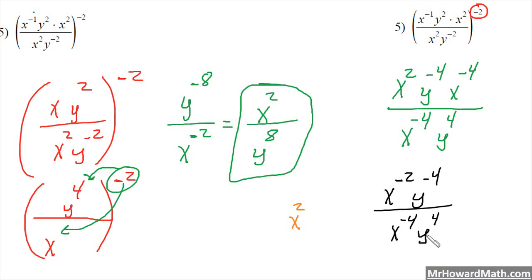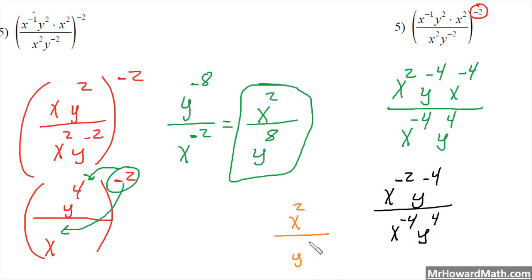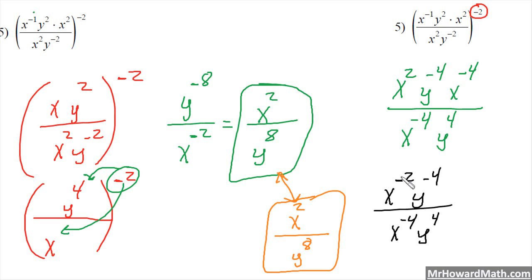For the y's: y to the negative 4 on top and y to the positive 4 in the denominator. The denominator's exponent is bigger by 8 — negative 4 to 4, they're 8 apart — so I have y to the 8th in the denominator. We get the same answer either way, so the path you take doesn't matter. You still get there as long as you apply the rules appropriately.